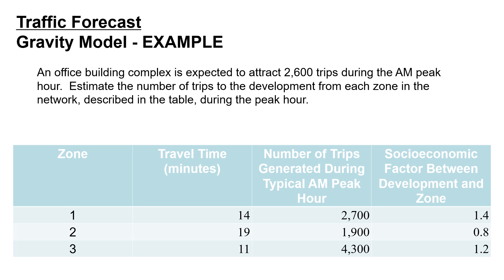We're told that there's travel time information between this complex and each of the three zones. We're told the number of trips generated during the typical AM peak hour for each zone and the socioeconomic factor between the development and each zone.